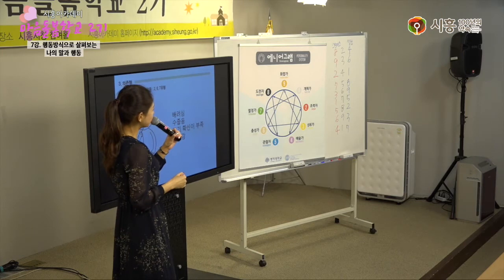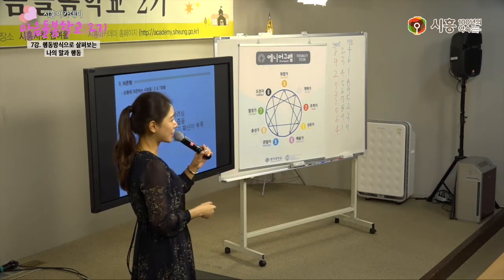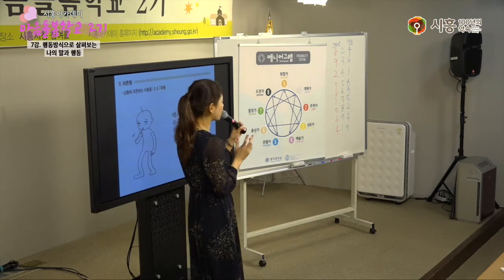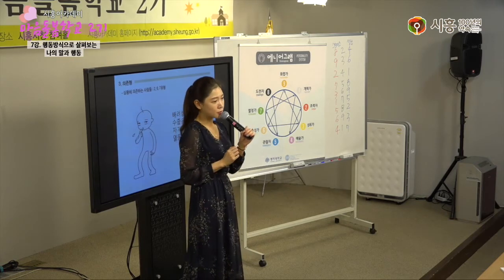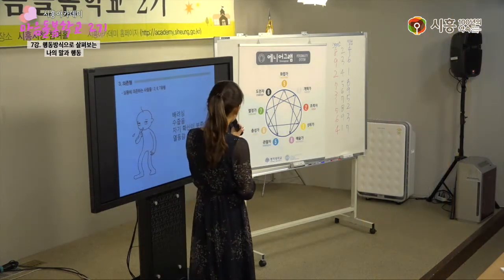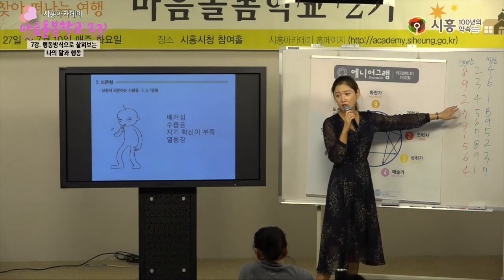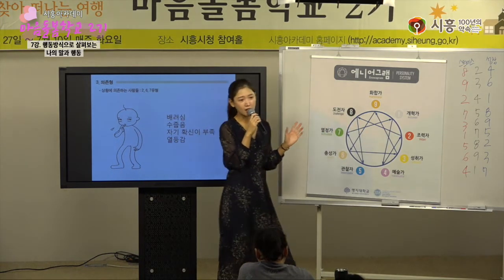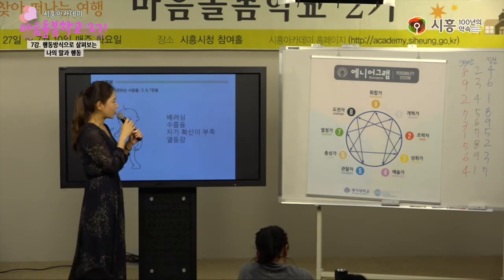4번 유형 같은 경우에는 나만의 세계가 있죠. 남들과는 구분되는 나만의 세계가 있는데, 어느 날 사람들이 뭐 하냐 하면서 내 어떤 고유한 정체성에서 인정받지 못했을 때 4번들이 갑자기 혼란이 와요. 사람들한테 인정받을 수 있는 모습을 보이려고 2번처럼 비위를 맞추기 시작을 해요. 4번의 성장 방향은 자신의 어떤 감정에 원칙을 세우고 사회에서 사람들과 어울리는 거예요.